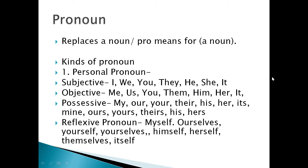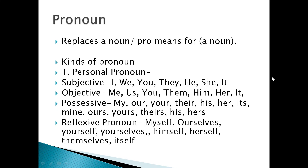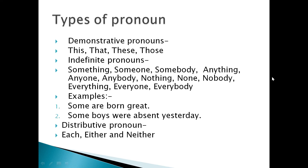There are five types of pronoun. Number one, personal pronoun — in personal pronoun there are basically three categories: subjective, objective, and possessive. Second, reflexive pronoun. Third, emphatic pronoun. Fourth, demonstrative pronoun. And fifth, indefinite pronoun. When we talk about personal pronouns, we categorize them in three categories: subjective, objective, and possessive.